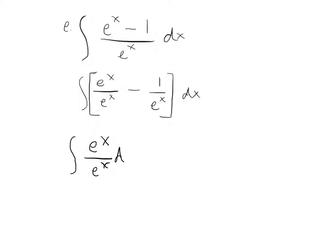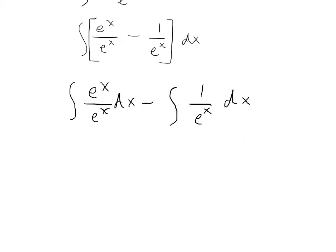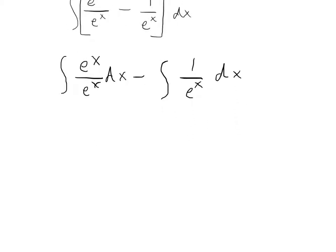Oh yeah, I want that dx minus the integral of 1 over e to the x dx. So I'm going to keep moving down here. This will just, the first integral will just simplify to the integral of dx, well dx times 1, but we don't have to notate that, minus the integral of 1 over e to the x dx.